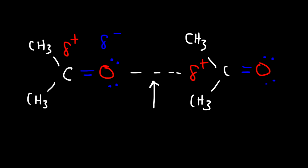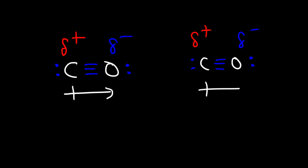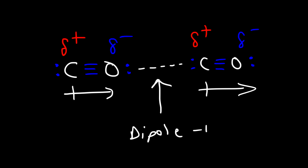Let's consider another example: carbon monoxide. The carbon bears a partial positive charge and the oxygen bears a partial negative charge. Drawing another carbon monoxide molecule next to it, each of these molecules possess a dipole moment — you can call it a dipole. The interaction between one dipole with another is known as a dipole-dipole interaction, and so those two molecules are attracted to each other.